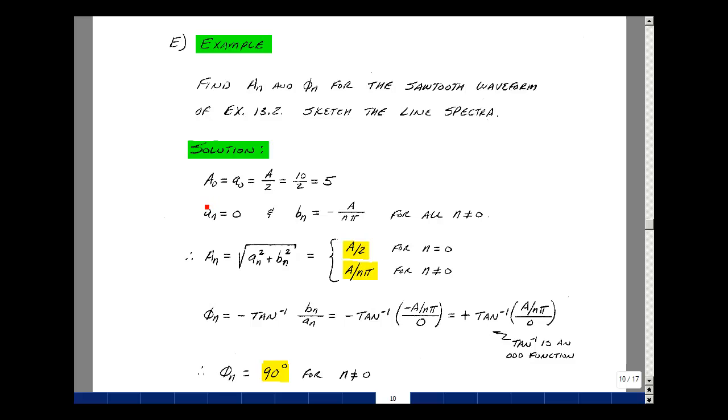Lowercase a₀ is the same as uppercase A₀, equal to our amplitude divided by 2, which was 10, so we get 5. We found that lowercase a_n equals 0, and lowercase b_n equals minus a over nπ for all n not equal to 0. Then we can use our formula for uppercase A_n as the square root of a_n squared plus b_n squared. For n equals 0, we found that to be a over 2, which was 5. For this other case, we're going to square this minus sign and then square root it, so we have a divided by nπ.